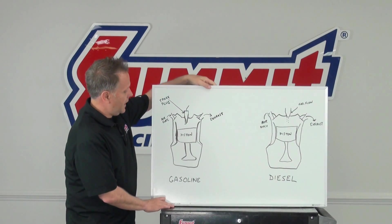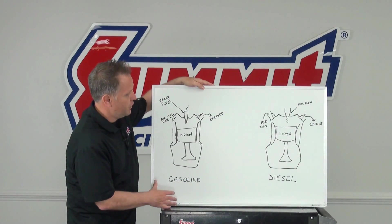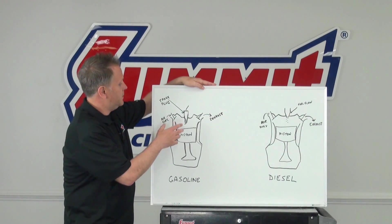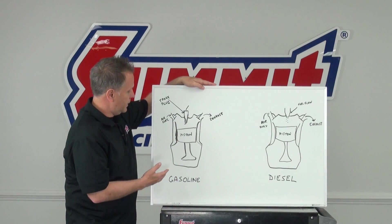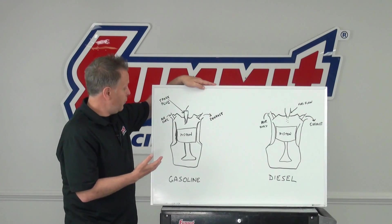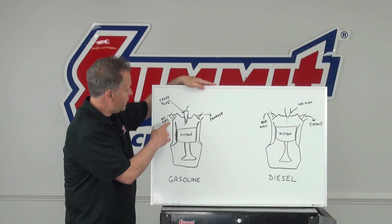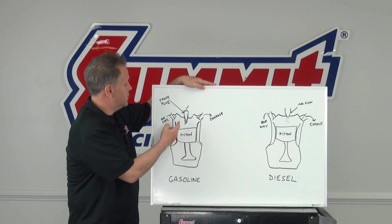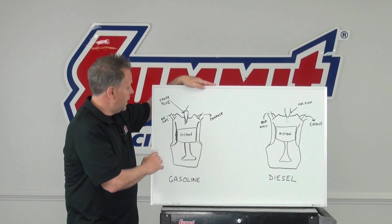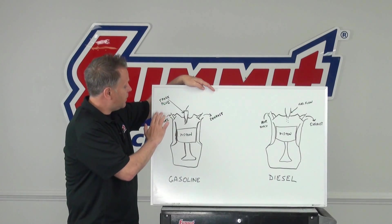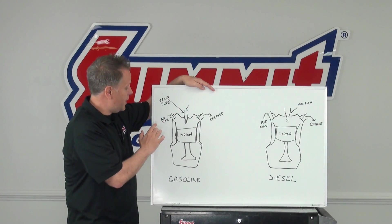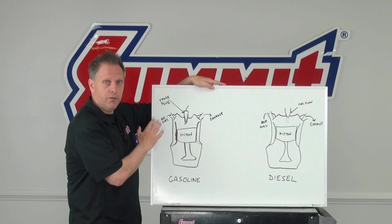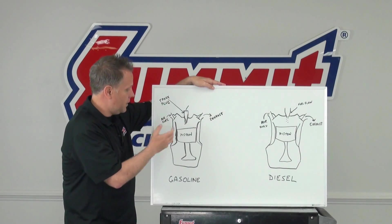Looking at our diagram, we have basically a side view of a cylinder in an engine. You can see the piston on each side looks fairly similar — there are the intake and exhaust ports. On the gasoline engine, which many of us are more familiar with, you have the air-fuel mixture coming in and exhaust going out. While the air-fuel mixture is in the cylinder, there's a spark plug there to ignite it. The air and fuel is mixed outside via a carburetor and down through the intake manifold, or in the intake manifold port via a fuel injector. So air and fuel is mixed outside of the engine cylinder.